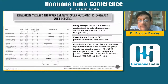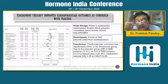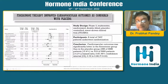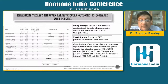Finerenone definitely reduces the progression of CKD. The FIGARO trial conclusion was that the primary cardiovascular outcome was significantly lower in the finerenone group compared to the placebo group, and it showed improvement in both cardiovascular and renal outcomes.